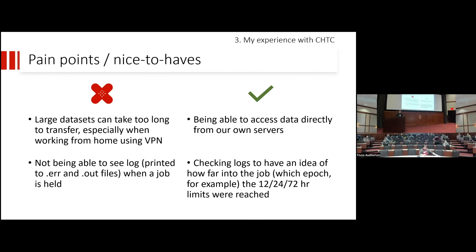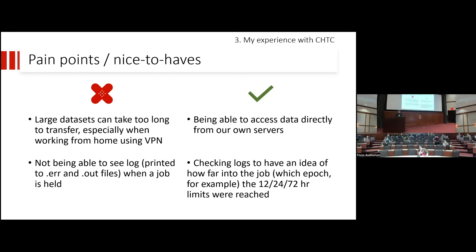Some pain points and nice-to-haves: large data sets can take a long time to transfer to CHTC, especially during the pandemic working from home. I was using VPN and it was a nightmare to upload large data sets to CHTC. So it would be nice to be able to have CHTC access that data directly from our storage units. Not being able to see the log when a job is held is also a pain point because sometimes I want to check if I passed the, for example, 12 hours limit. I would like to see in which epoch the job was interrupted so I know how many epochs I need to train. One final pain point is that I have to frequently check if jobs are done running, so it'd be nice to have some sort of notification system. And also it would be nice to have access to the logs while the job is still running instead of waiting for the job to be done.